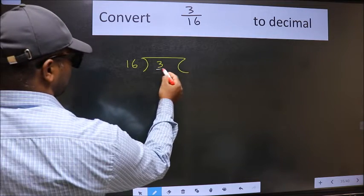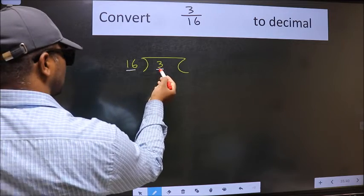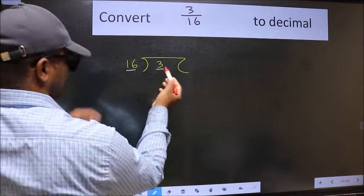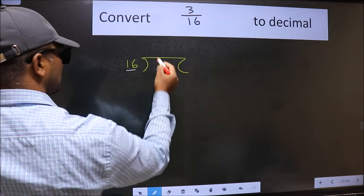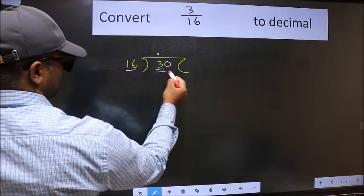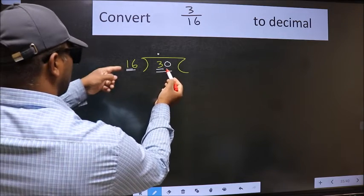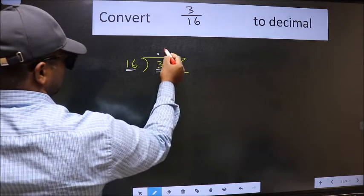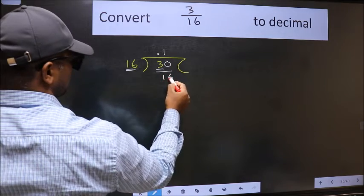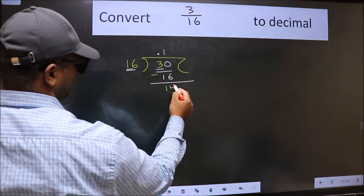Now here we have 3 and here 16. 3 is smaller than 16. So what we should do is, we should put dot and take 0. So 30 and 16. A number close to 30 in 16 table is 16 once 16. Now we should subtract. We get 14.